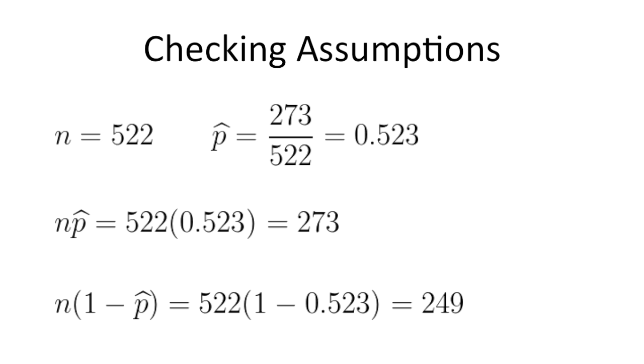n times 1 minus p hat equals 522 times 1 minus 0.523. This is 249. There were 249 students in this sample who said no, they do not own a dog.